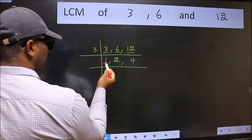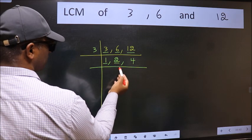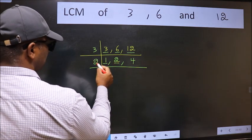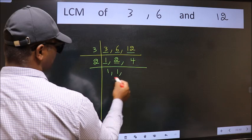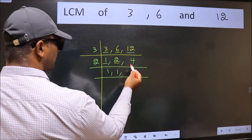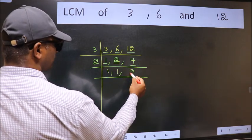Now we got 1 here so focus on the next number 2. 2 is a prime number so 2, 1 is 2. The other number 4, when do we get 4 in 2 table? 2, 2 is 4.